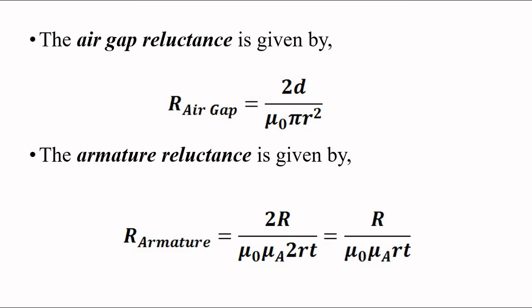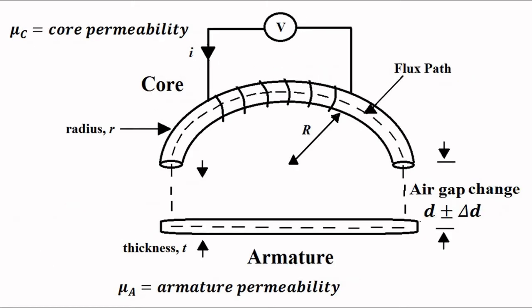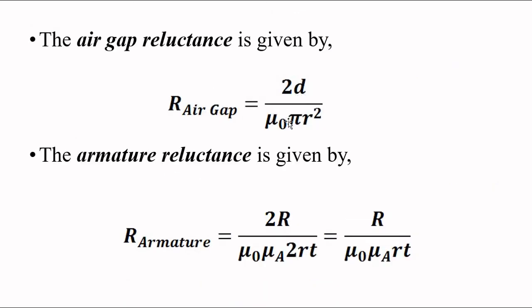The core and armature reluctances are fixed, because all associated parameters — the radius, the number of turns of coil, and the thickness — are all fixed. The only variable is the air gap distance d, because the armature is movable; it is connected to the point where displacement is to be measured. Any movement of the armature changes d, so only the air gap reluctance 2d/(μ₀ π r²) changes due to the change in d.